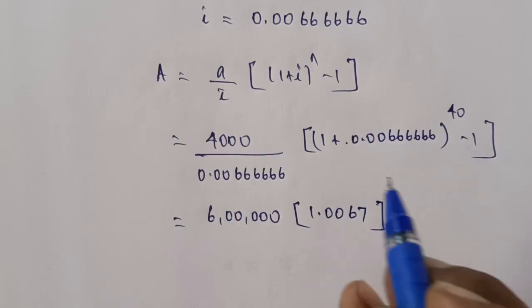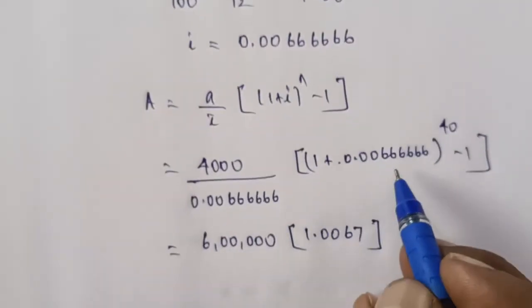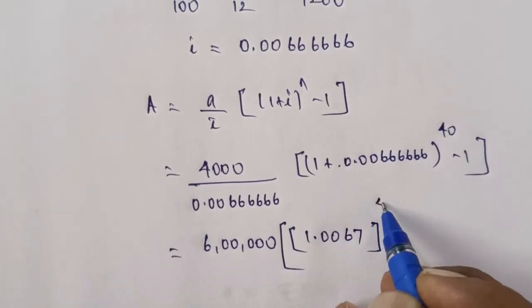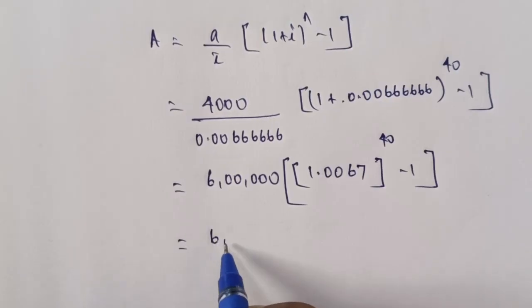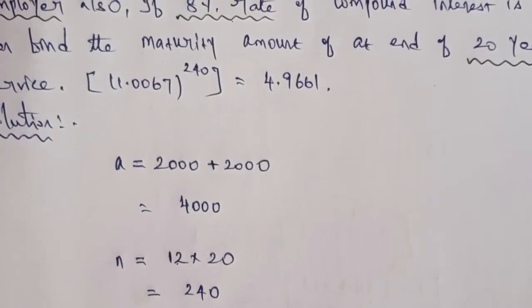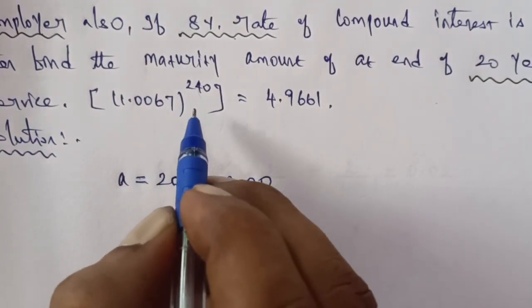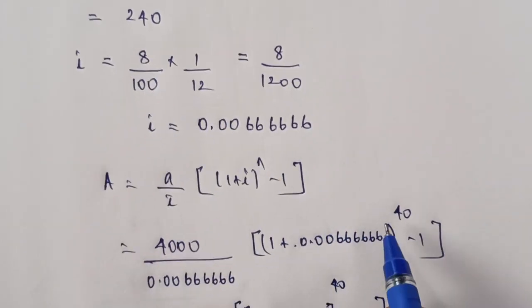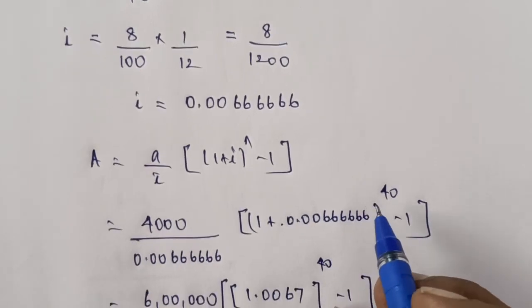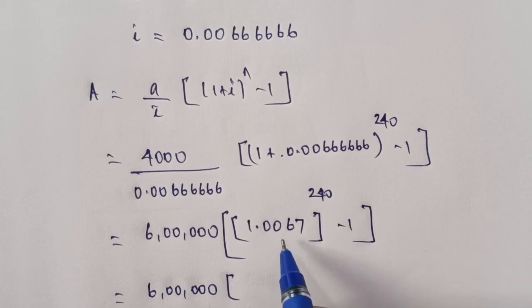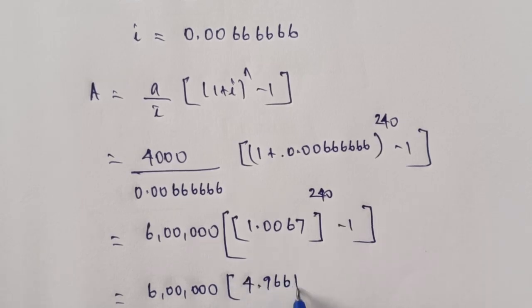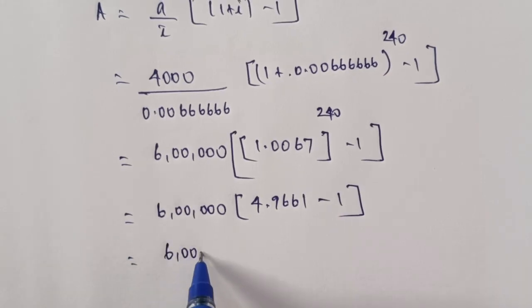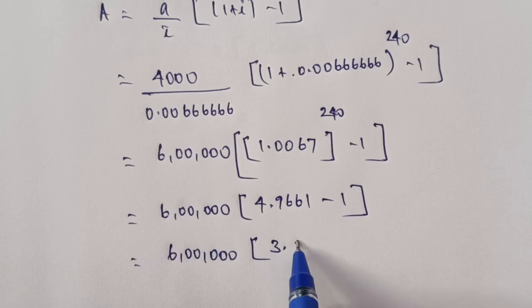Now 1.0067 to the power of 240 minus 1. Calculating 1.0067 to the power 240 gives 4.9661. So this becomes 600,000 times 4.9661 minus 1, which equals 600,000 times 3.9661. This gives the maturity amount.